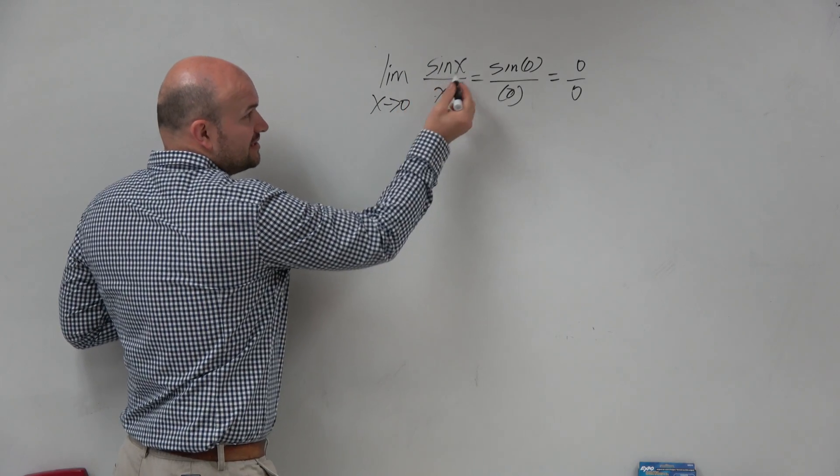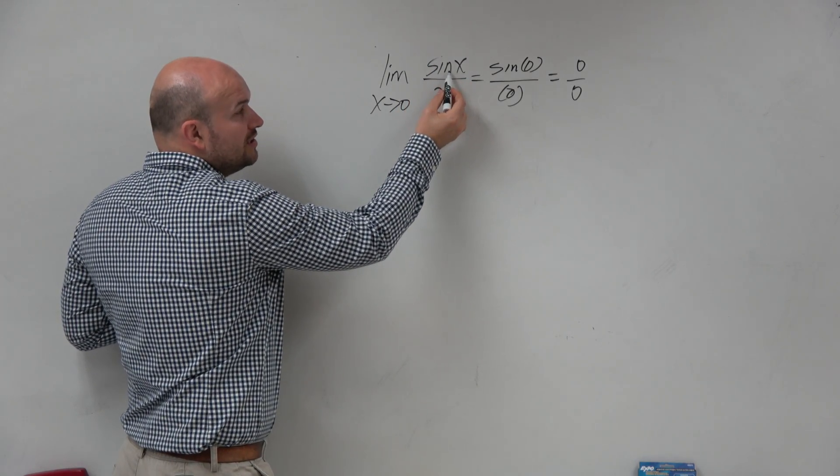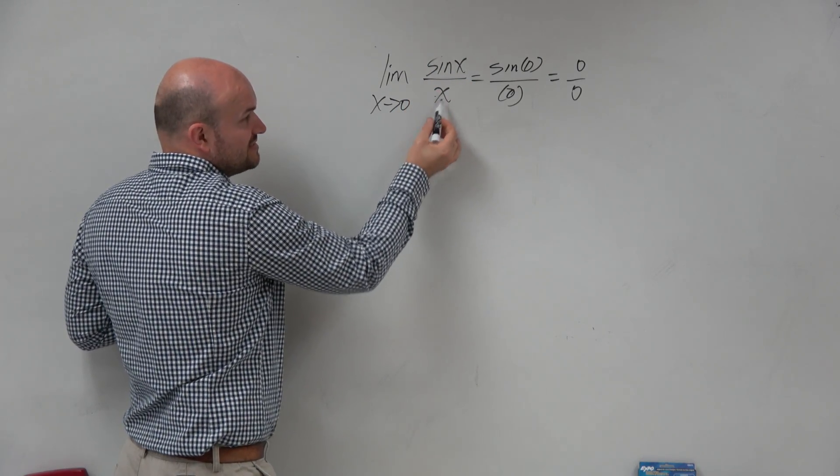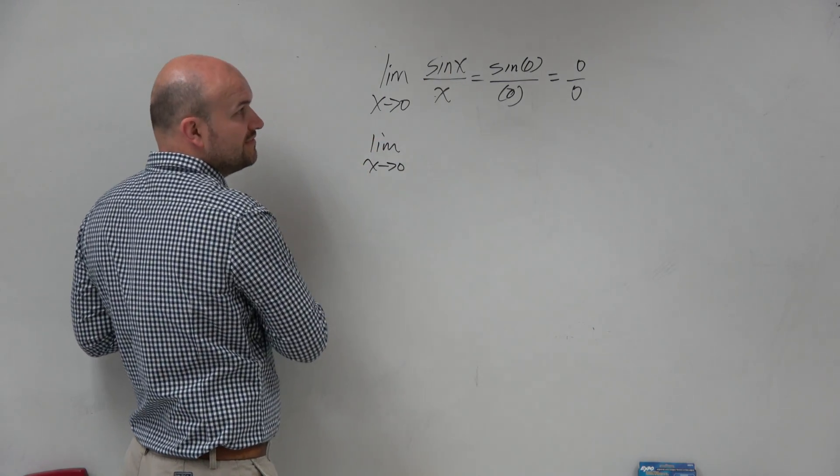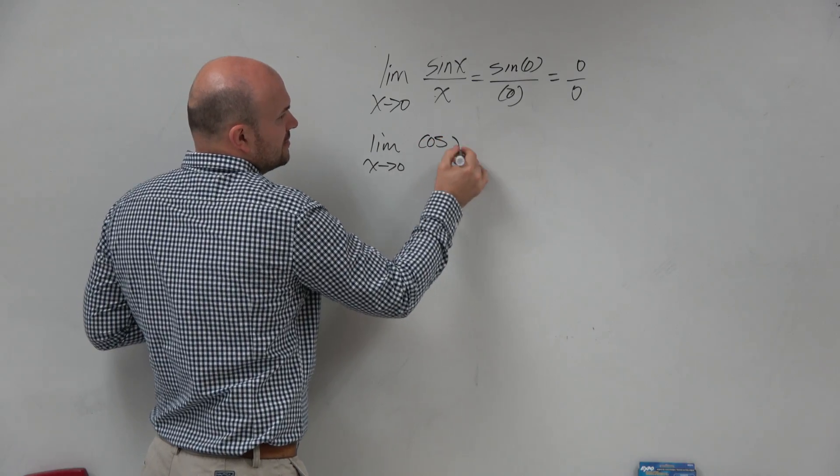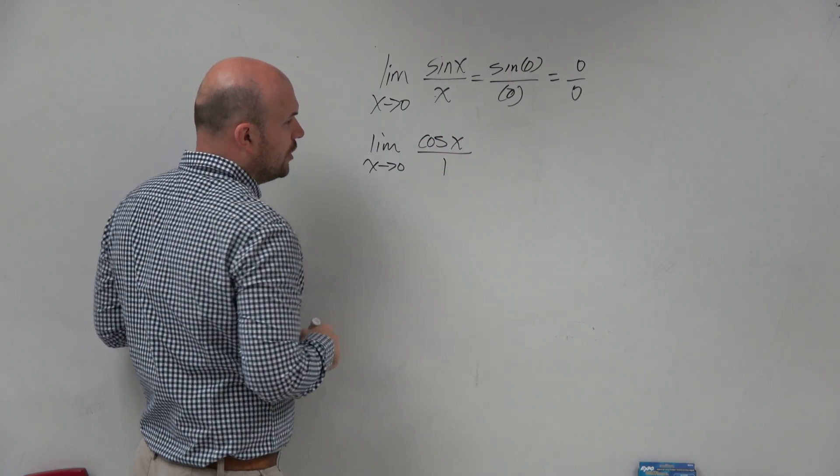which means we're going to take the derivative of the numerator with respect to x and the denominator. So when we do that, we get the derivative of sine of x is cosine of x over 1.